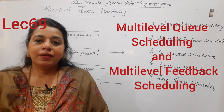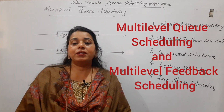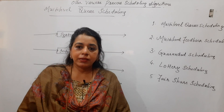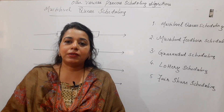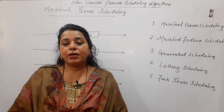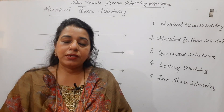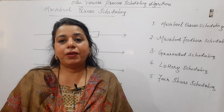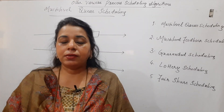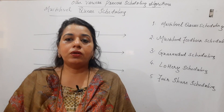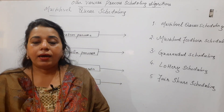Hello viewers, welcome back to my channel. In this session I shall discuss various other scheduling algorithms. In the first module on process management, after the introduction to processes and threads, you learned about scheduling algorithms such as FCFS, Shortest Job First, SRTN, Round Robin, and Priority Scheduling. Numericals can be asked on these algorithms in examinations.